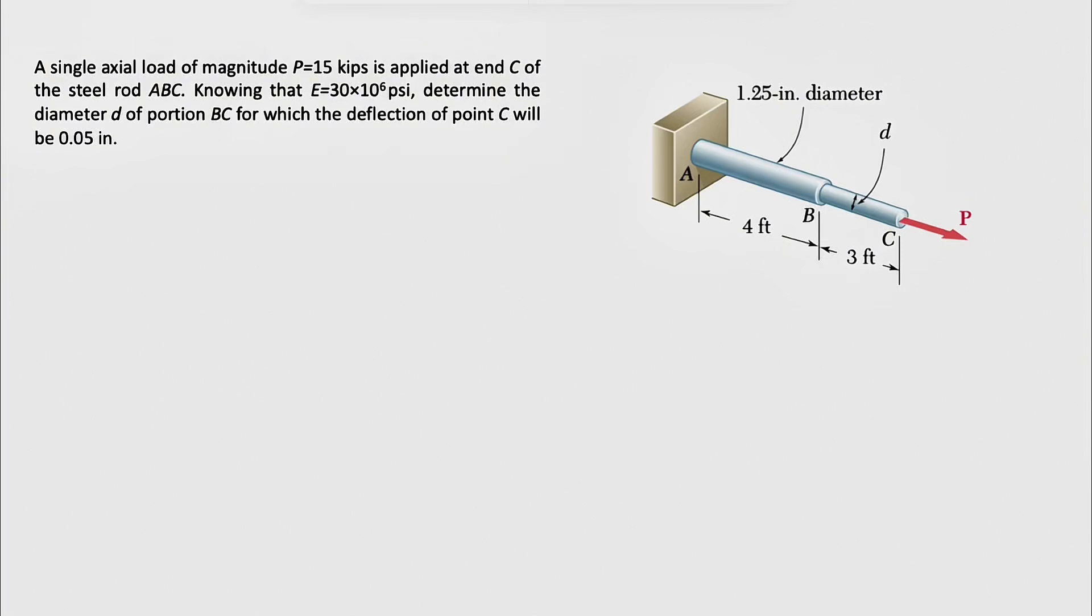Alright guys, we're going to be solving another question from the second chapter of Mechanics of Materials by Beer and Johnson. We have a single axial load of magnitude 15 kips, so we have this force P applying at point C, which is 15 kips.